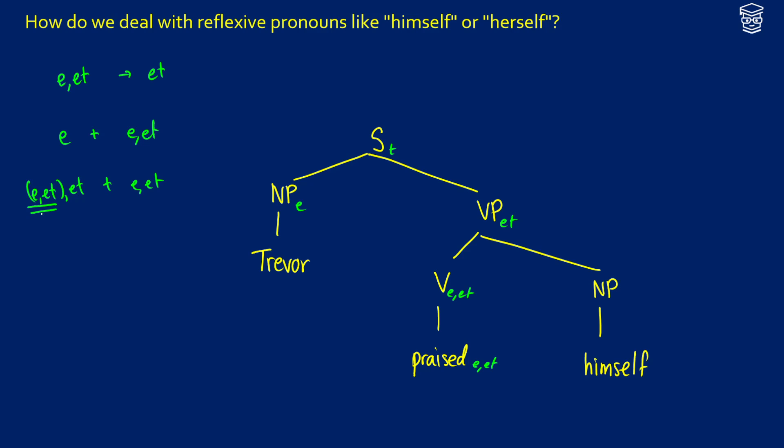which means that himself is going to take praise as an argument rather than the other way around. So I want to suggest, and this is how I'm going to write this, is that this is an EET, ET, EET, ET, commas like that. And then as these two combine, we're going to get something else that occurs. We're going to get our ET out, but the form of himself is going to be different.